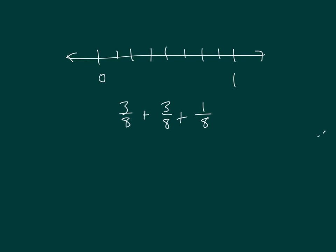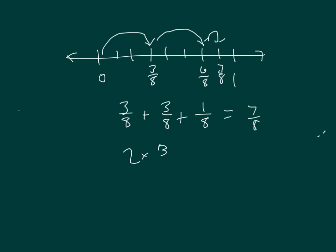First we have 3 eighths: 0, 1, 2, and 3. Let's draw the arrow to hit 3 eighths. And then we're adding another 3 eighths, so that we get to 6 eighths. And then we add another eighth, so we get to 7 eighths. So 3 eighths plus 3 eighths plus 1 eighth is equal to 7 eighths. That's the same as 2 times 3 eighths plus 1 eighth, which also equals 7 eighths.